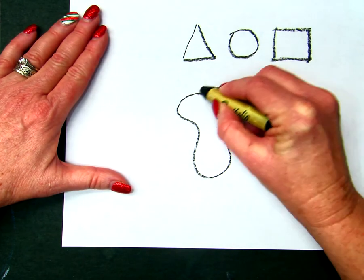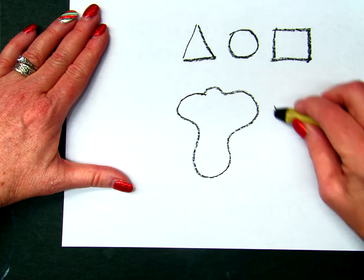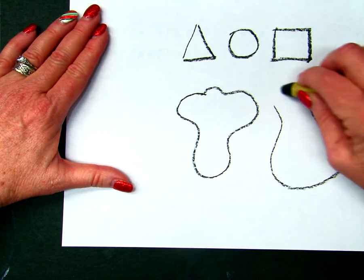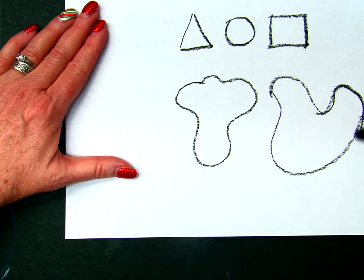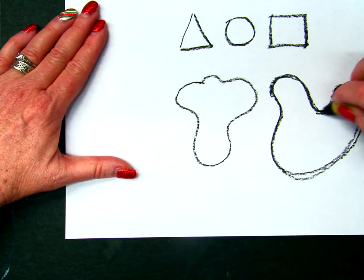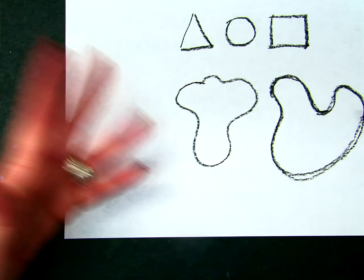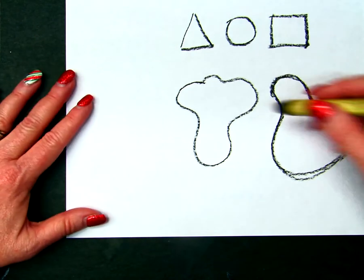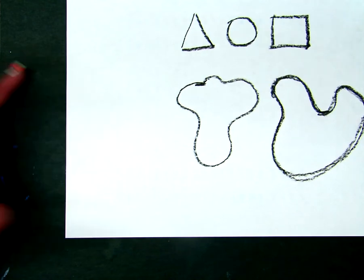So an organic shape is going to look something like that. That's organic. You see what I'm saying? It's very loose and it flows on the page. It doesn't have corners like that. That might be considered a corner right there, but not really.